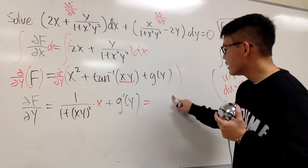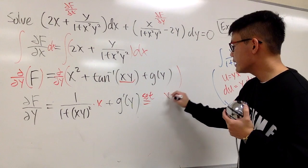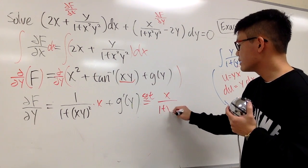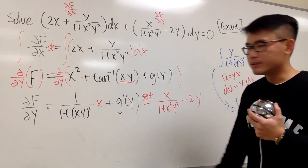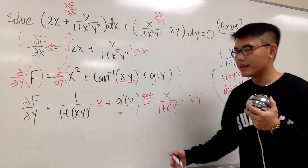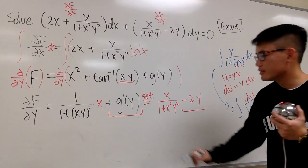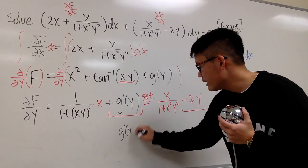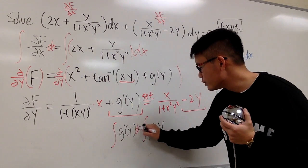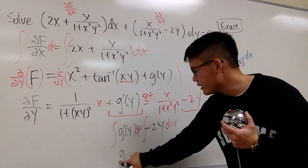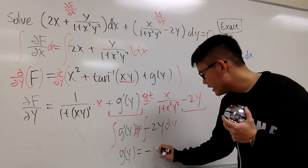This right here, we set it equal to x / (1 + x²y²) minus 2y. We can see that the arctan derivative term matches the first part, which means g'(y) must equal minus 2y. So g'(y) = −2y, and integrating both sides with respect to y gives g(y) = −y².